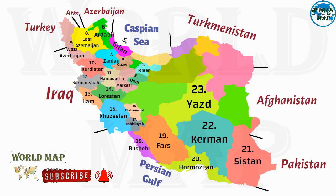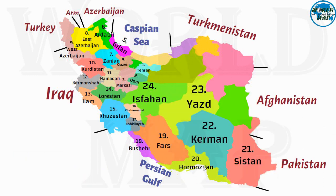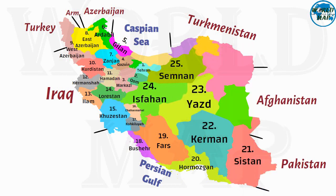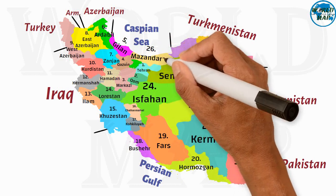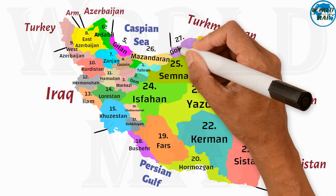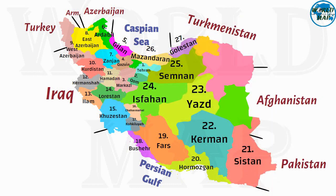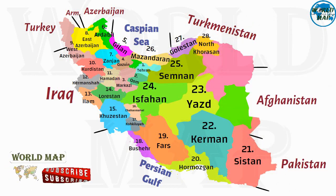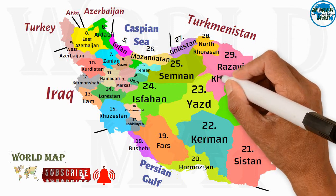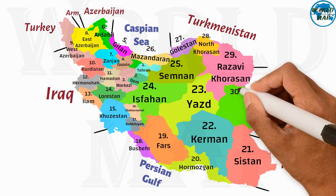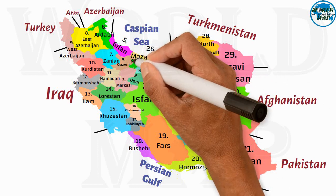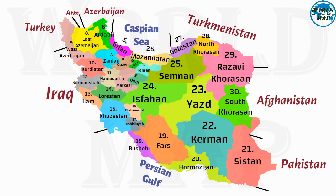Number 22: Kerman. Number 23: Yazd. Number 24: Isfahan. Number 25: Semnan. Number 26: Mazandaran. Number 27: Golestan. Number 28: North Khorasan. Number 29: Razavi Khorasan. Number 30: South Khorasan. Number 31: Alborz.